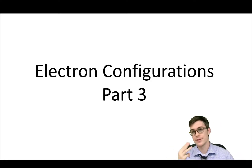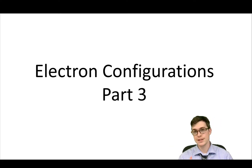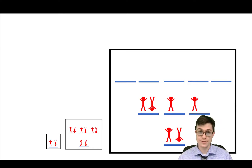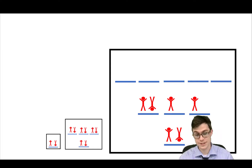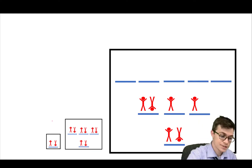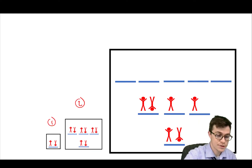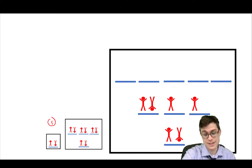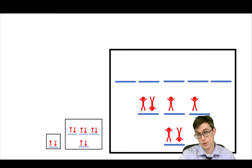Hello everybody, and welcome to my third lecture on electron configurations. What we learned last time was that the atom has several different energy levels that don't all have the same sub-levels, the same shapes. So the first, second, and third energy levels don't all have the same sub-levels available. The bigger energy levels have more shapes.